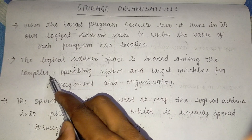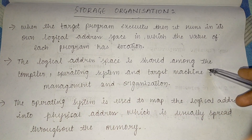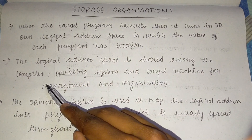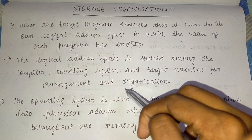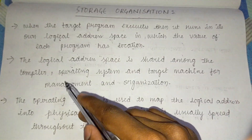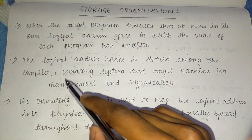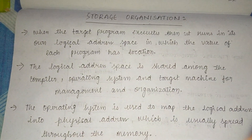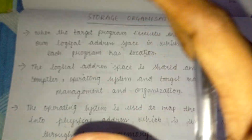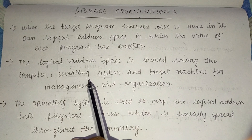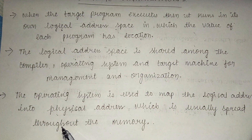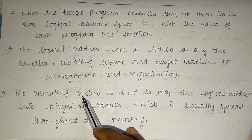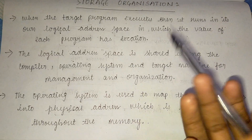The logical address space is shared among the compiler, operating system, and target machine for management and organization. They have a huge shared space that is managed collectively.